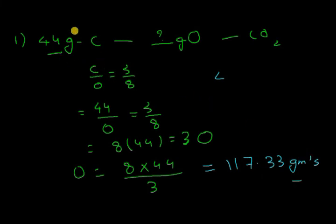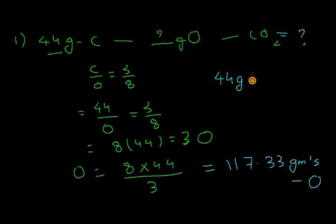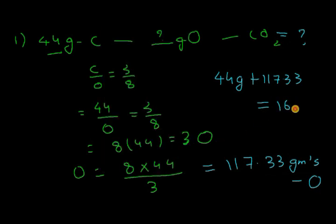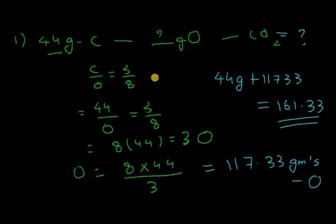Another question: when 44 grams of carbon reacts with 117.33 grams of oxygen, how much carbon dioxide is produced? Simply add the two masses: 44 + 117.33 = 161.33 grams of carbon dioxide. You can expect many examples in this form — you just need to remember the ratio.